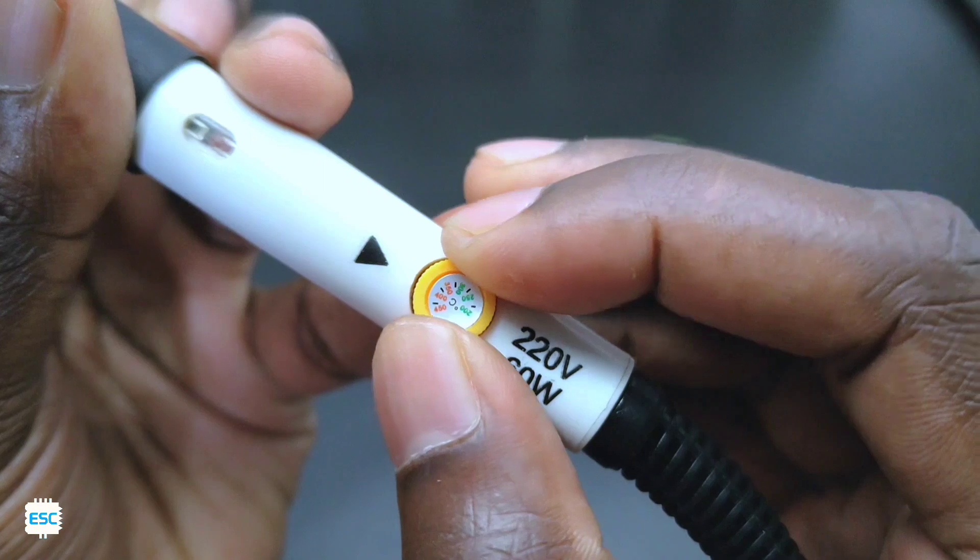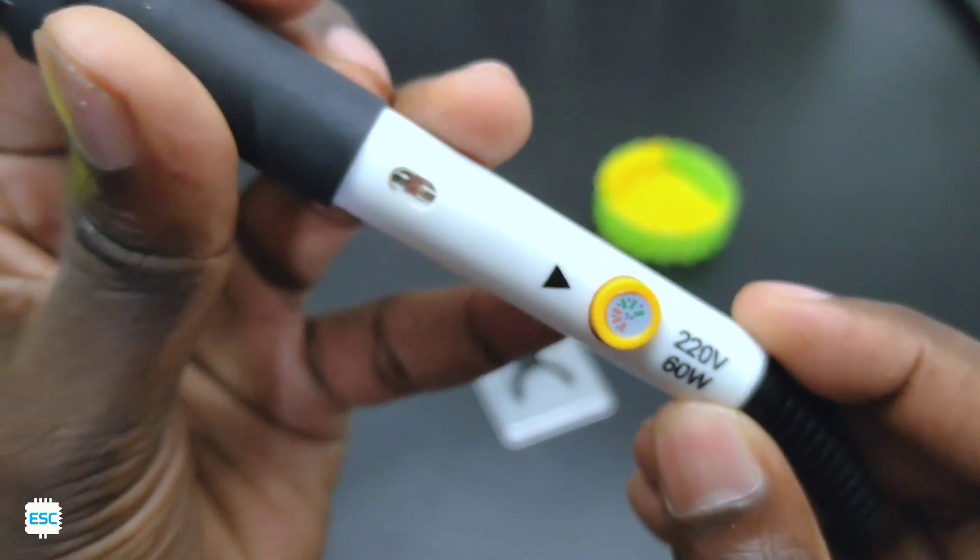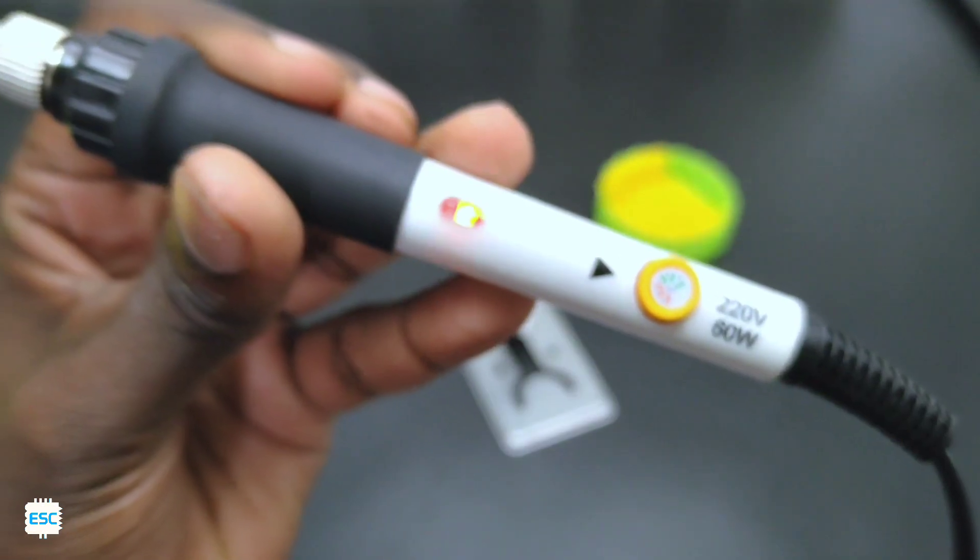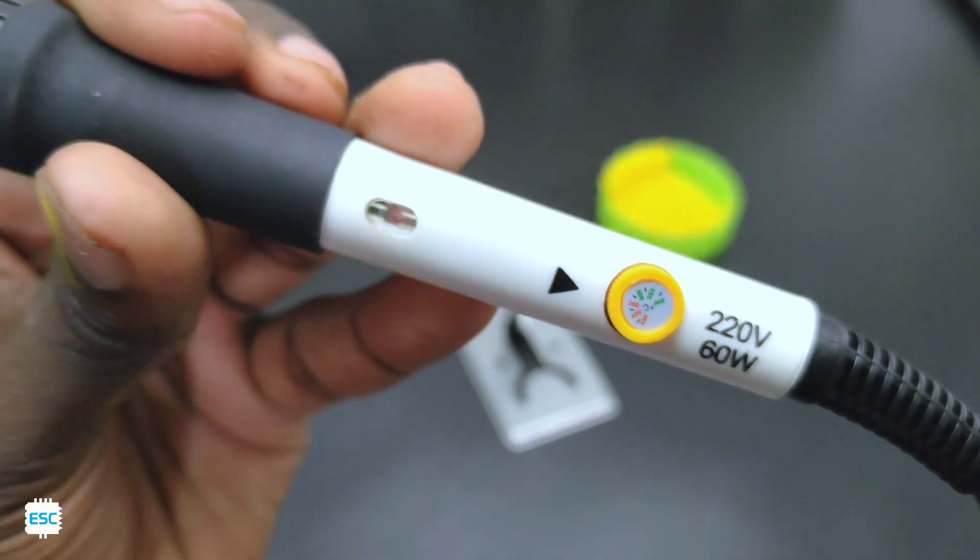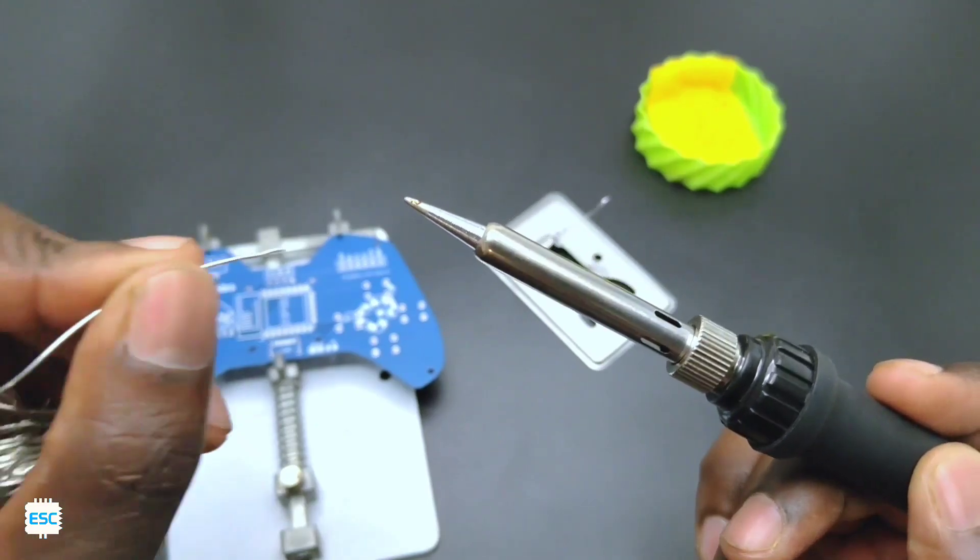Now on the soldering iron we can see a yellow knob which is used to adjust the temperature. Here I set that in 350 range. Now let's turn on the soldering iron by connecting it to the supply. After a couple of minutes soldering iron will be ready to use. Now apply some lead to the soldering tip.